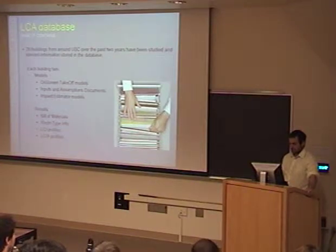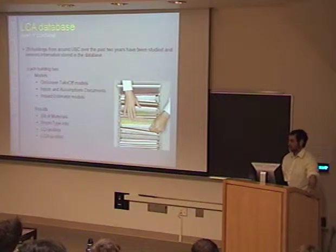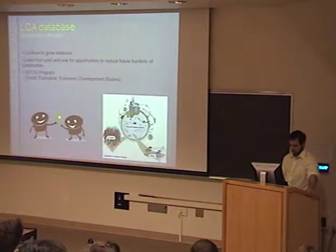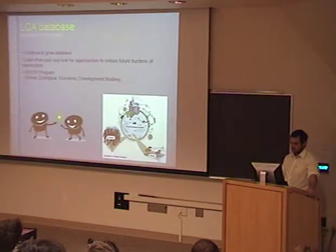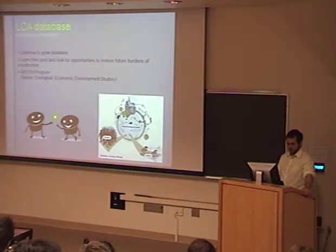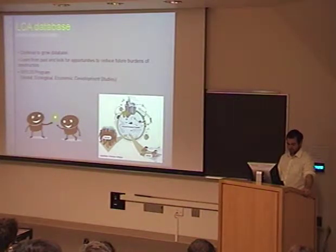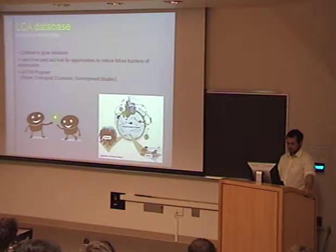We've also stored life cycle impact assessment profiles categorized into eight impact categories. With this database, we'll be able to compare future buildings to current ones to establish how future buildings are performing and understand where these impacts are coming from. In the future, we're looking to grow this database to all UBC buildings and perhaps into residential and institutional buildings across Canada, with the hope of one day developing a program to assess, reduce, and certify green buildings across Canada.